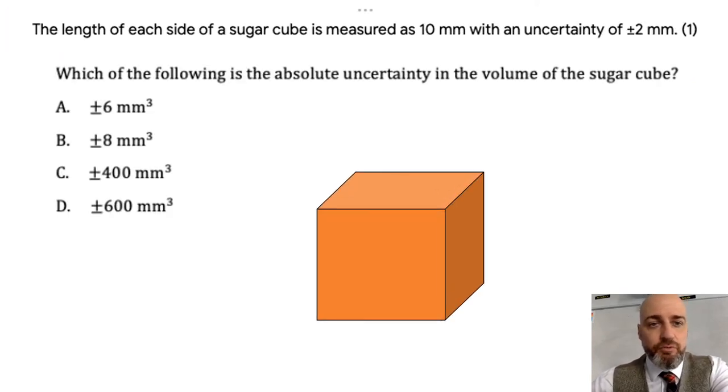So we have a cube of side 10mm and the uncertainty of measurement is pretty high, it is plus minus 2mm. You've got multiple choice answers here and what you've got to do is figure out the absolute uncertainty in the volume.